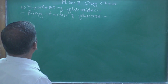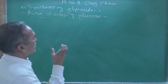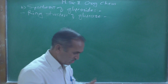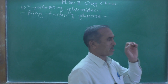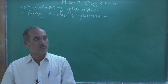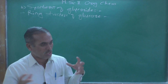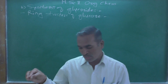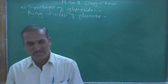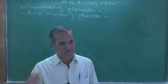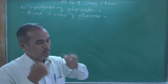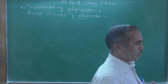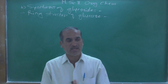Today we are going to discuss the synthesis of glycosides. Glycosides are the ring structure of glucose. After that we will see what type of glycosidic linkage is formed when studying disaccharides, trisaccharides, tetrasaccharides, and polysaccharides.